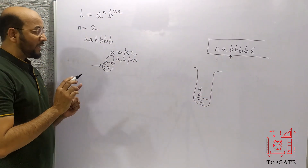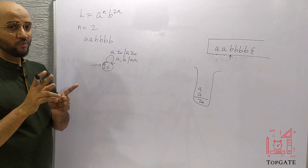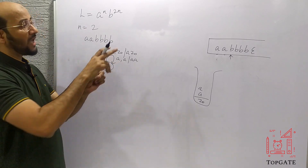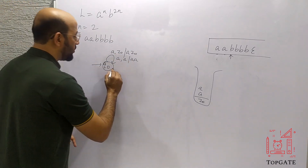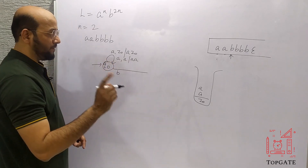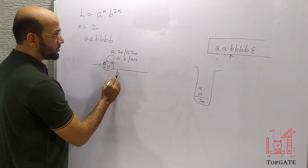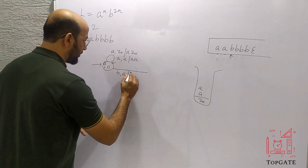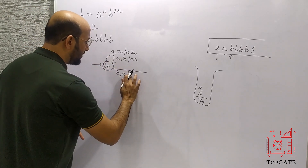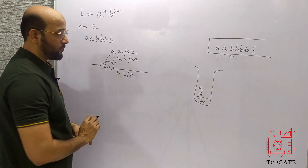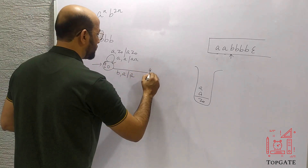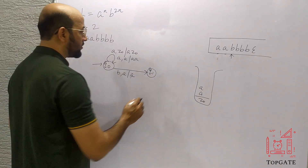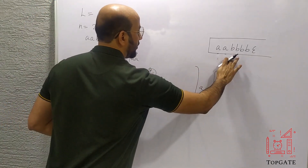This A is pushed and the pointer moves to the second A. For the second A, element to process is A, top stack element is A — push it again. The pointer now comes to the first B. As I said, for the first B we simply bypass it — do nothing to the stack. So element to process is B, top stack element is A, we skip it. We reach new state Q1 and the pointer moves to the next B.